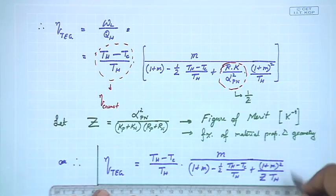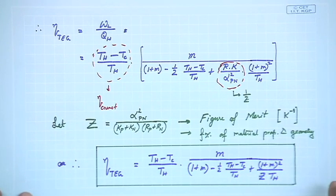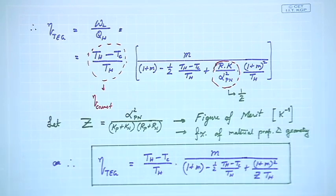So the efficiency of a thermoelectric generator is: η = (T_h − T_c)/T_h · m / [1 + m − ½·(T_h − T_c)/T_h + (1+m)²/(Z·T_h)]. This is one of the most important expressions in thermoelectric generators. Today we derived this efficiency expression through energy balance as a function of material properties, dimensions, and circuit properties (external load resistance). In the next class we will complete this exercise and wrap up thermoelectric generators. Thank you very much.